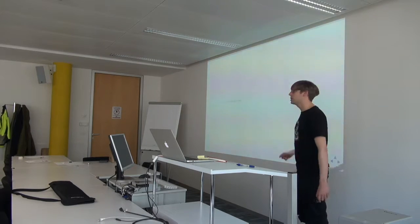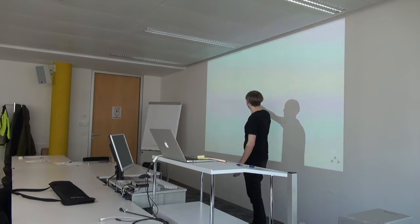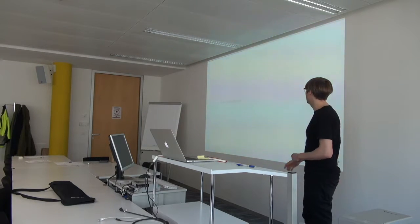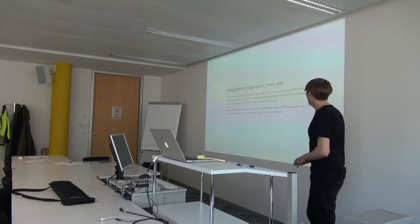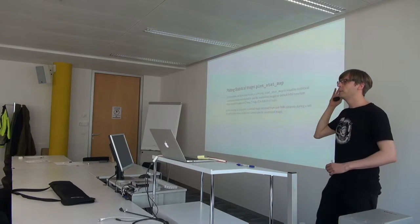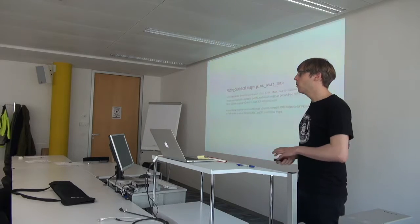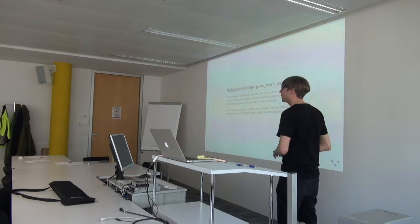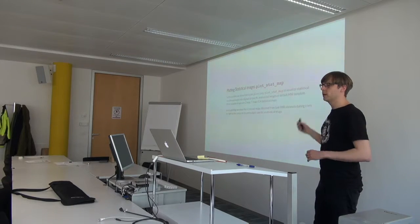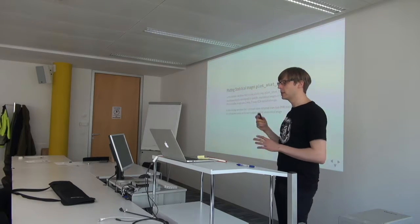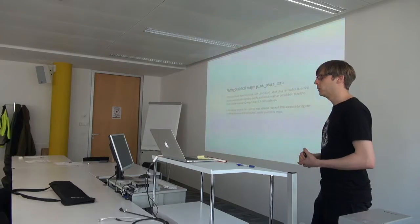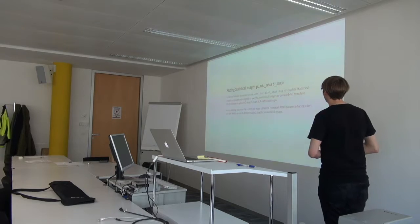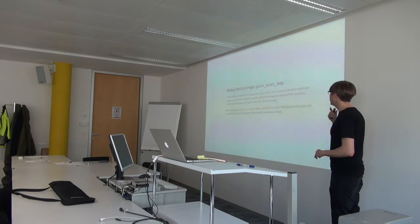Now, if we have an anatomical image, we probably have some functional data we want to overlay over it — maybe a T-map, a statistical map, or an ICA map — whatever you have that's in the same space as the anatomical image. You can use the plot_stat_map function for that.